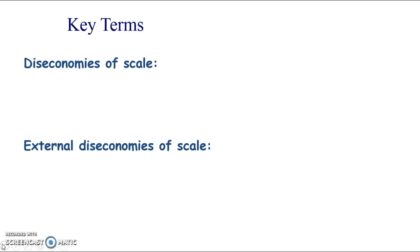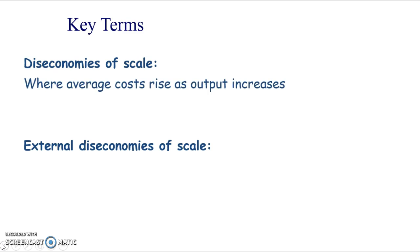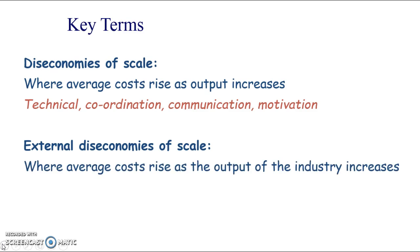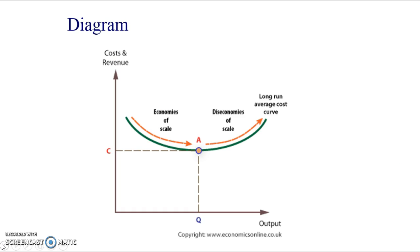Whereas diseconomies of scale — internal diseconomies of scale — are where average costs rise as, again in the long run, the output of the particular firm increases. And then external diseconomies of scale are where average costs rise as the output of the industry increases in the long run.